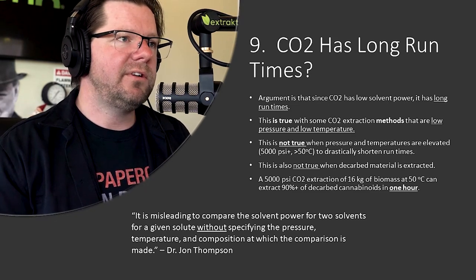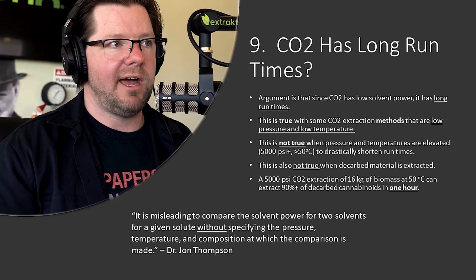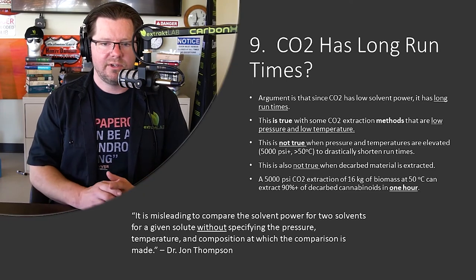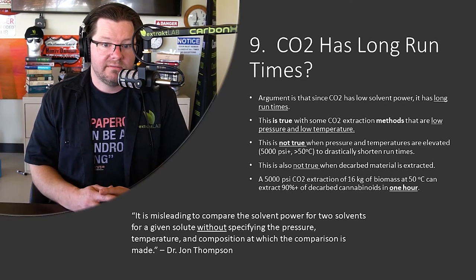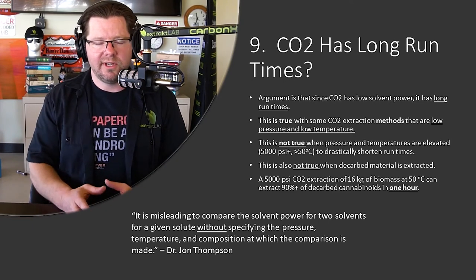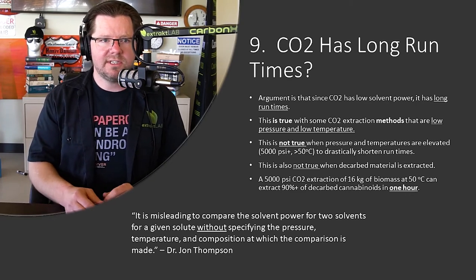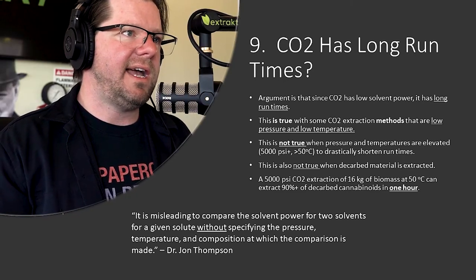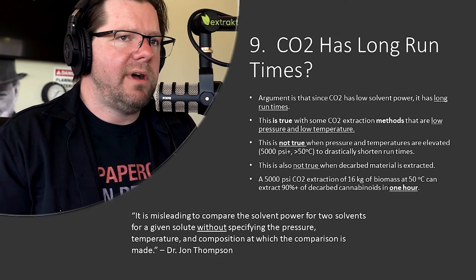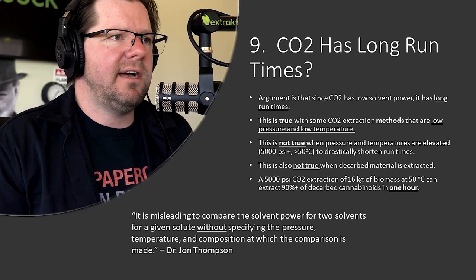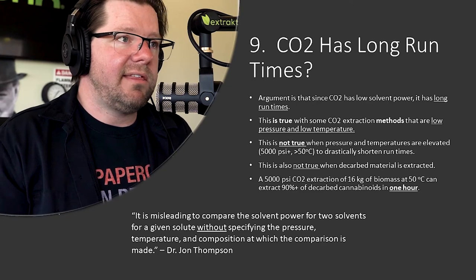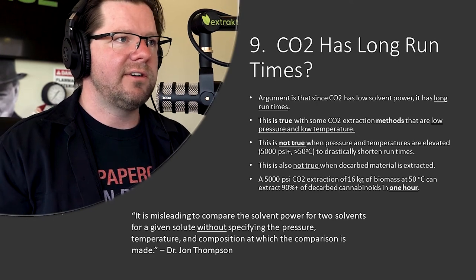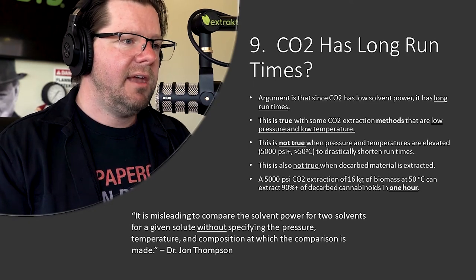When pressure and temperature are elevated, you can really shorten up run times. Also, if you run decarbed material it's a lot faster. We decarb the biomass ahead of time so terpenes are not being degraded during extraction — you can go even faster. Run time is dependent upon what material you're extracting and what the temperature and pressure are. Ethanol is fast because of its high solvent power, but the issue is recovery of that ethanol and the cost associated with it.